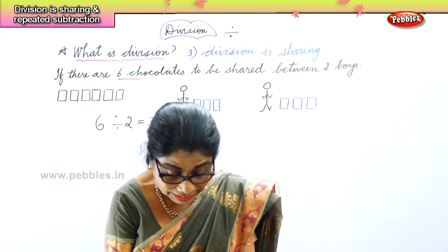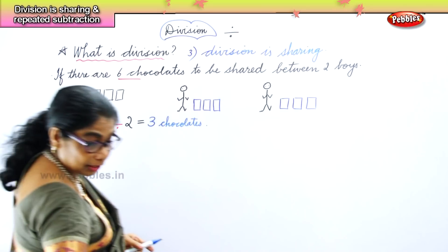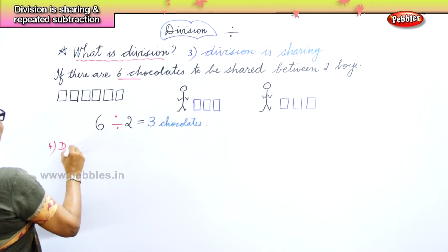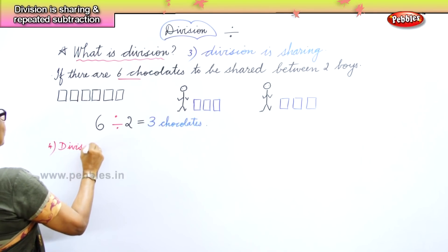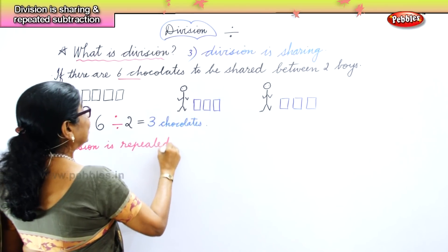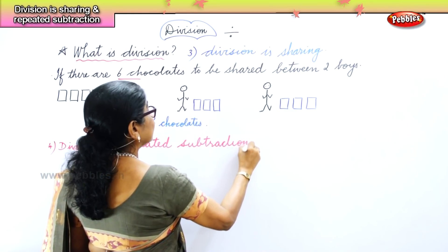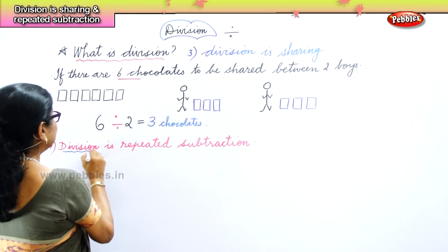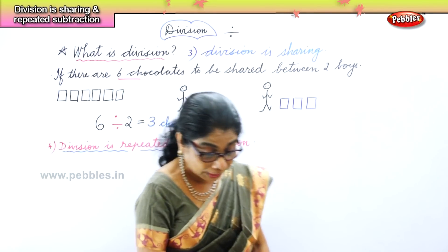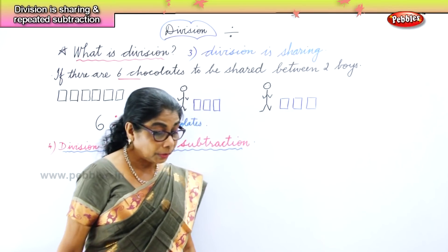We had six chocolates divided between two boys, and each gets three chocolates. That is division as sharing. Now finally the fourth concept: division is repeated subtraction. What is division? Division is repeated subtraction.